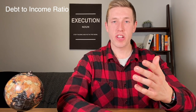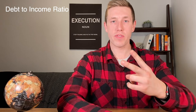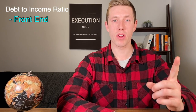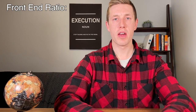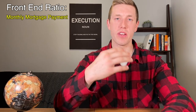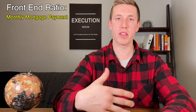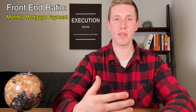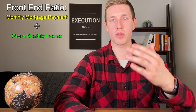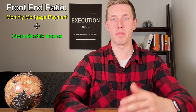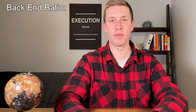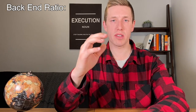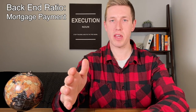So for your debt to income ratio, there are two factors: front end and back end. The front end ratio is calculated by taking an individual's anticipated monthly mortgage payment and dividing it by the individual's gross monthly income. This shouldn't exceed 30%.